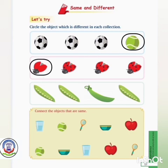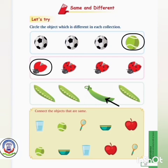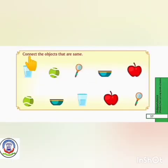Now let's have another picture. Look at this picture of peas and identify which peas are different and which is the same. These three peas are the same and this one is different, so we will put a circle over it. Connect the objects that are same.